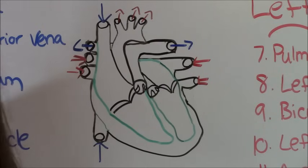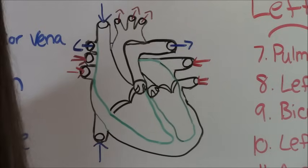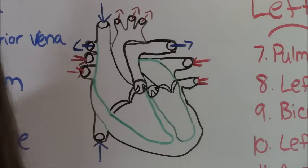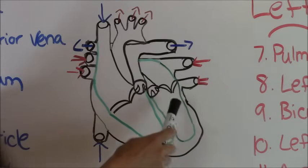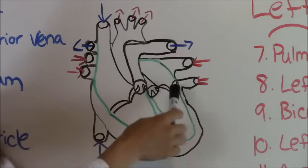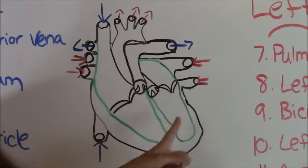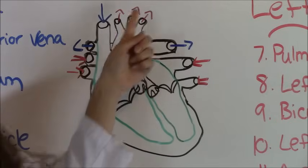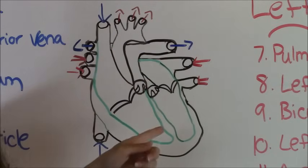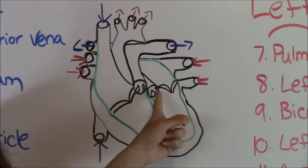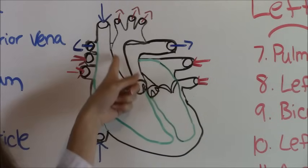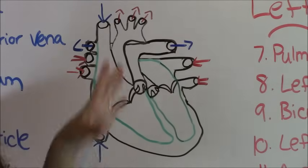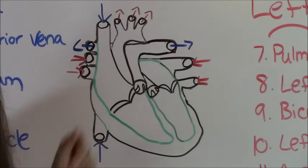The bicuspid valve is also known as the mitral valve or the atrioventricular valve. That can be confusing because you might hear people say mitral valve or tricuspid valve and wonder which is which. So the bicuspid has three different names: bicuspid, mitral, or atrioventricular. Keep that in mind because physicians or teachers may refer to it by different names. Below the bicuspid valve is your left ventricle. Blood will shoot up through the aortic valve and up through the aorta to the body. That's the anatomy of the heart.